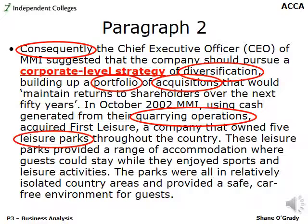Moving to paragraph two, we see another transition — 'consequently' — signaling an important piece of information. The circled term 'diversification' is relevant here. As discussed in relation to the technical article on mergers, acquisitions and managing strategic business units, there is concern about unrelated diversification. Within P3 there is necessary overlap between models — diversification is one of the four Ansoff growth strategies — and the technical article expresses deep concern about unrelated diversification specifically.